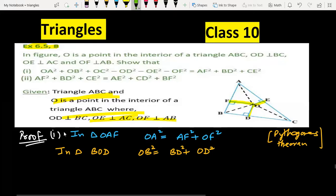OC square. We will take in triangle OEC. OC square equal to EC square plus OE square.